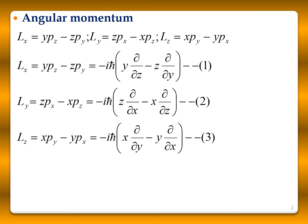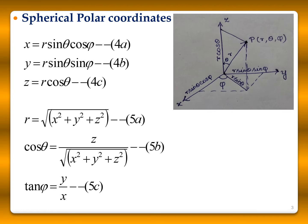These are all expressed in terms of operators in Cartesian coordinates. Now we have to represent them in terms of spherical polar coordinates. Spherical polar coordinates are R, θ, and φ, and we will show the representation of R, θ, φ in terms of X, Y, Z.